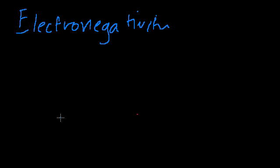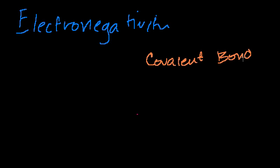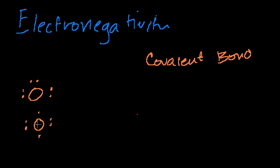The idea is that when two atoms form covalent bonds — and I haven't taught you what a covalent bond is yet, I'm planning to cover that in a couple of videos — the basic idea of a covalent bond is atoms sharing electrons. So if I have oxygen and add it to two hydrogens, hydrogen has one electron. The atoms will actually share electrons.